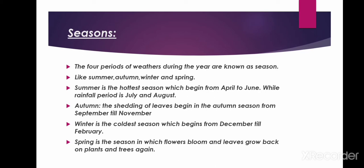Autumn: the shedding of leaves begins in autumn season from September till November. Winter is the coldest season which begins from December till February. Spring is the season in which flowers bloom and leaves grow back on plants and trees again.